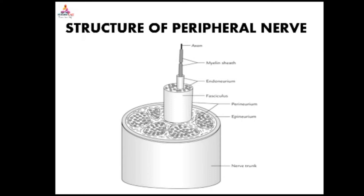The structure of the peripheral nerve: each peripheral nerve trunk contains a number of nerve fibers bundled, or fasciculated. There are three protective coverings of connective tissue in each nerve trunk: endoneurium, perineurium, and epineurium. The endoneurium is a loose and delicate connective tissue that surrounds the individual nerve fibers; it lies between the nerve fibers within a nerve bundle.